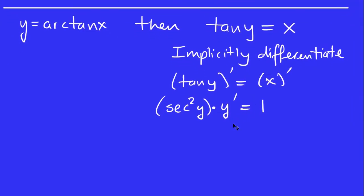Let's continue. We have y prime equal to 1 over secant squared y, right? So this is the part with implicit differentiation.